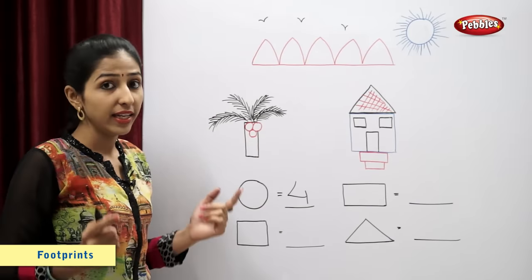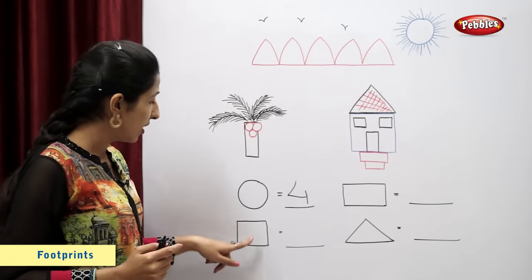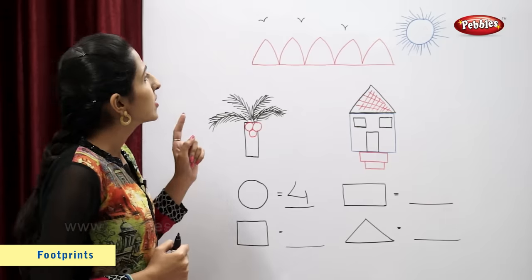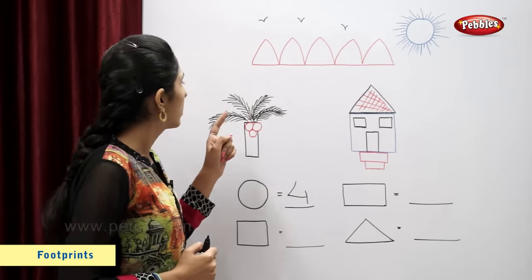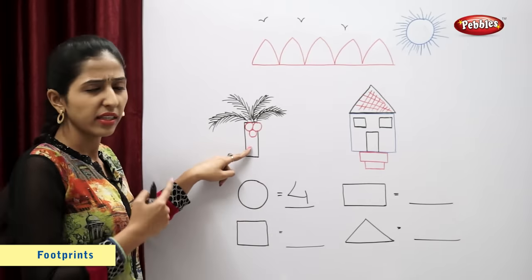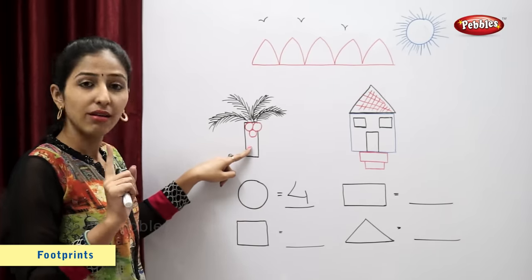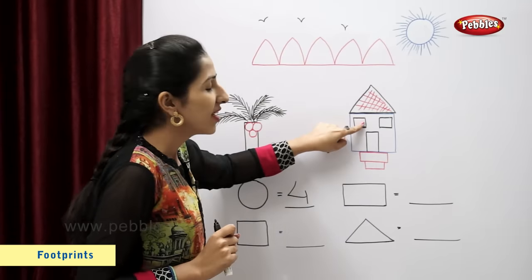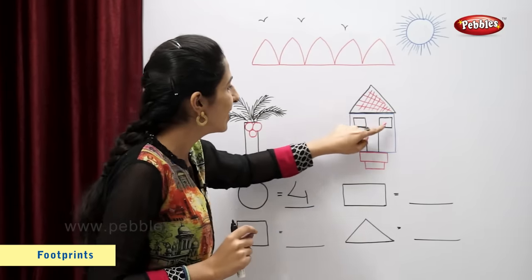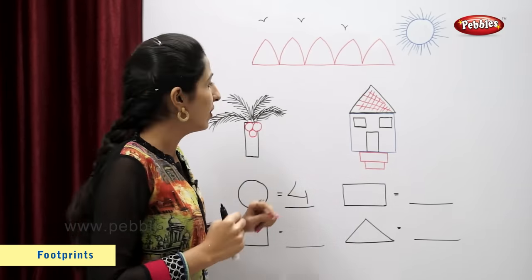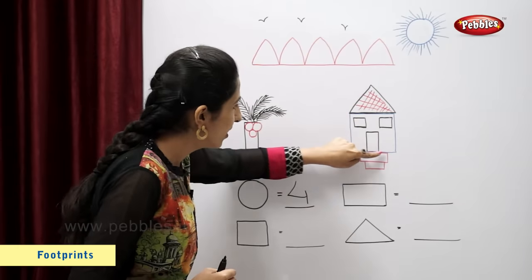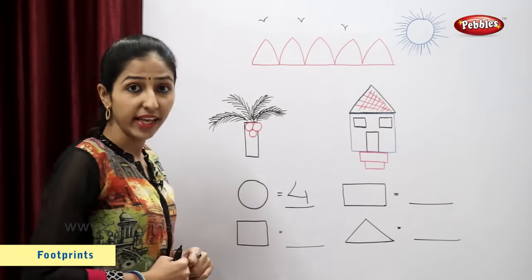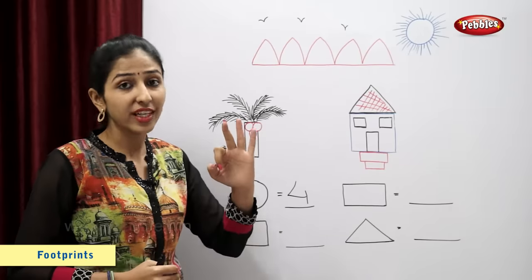Now let's count squares. Is this a square? No. One, two, three. So there are total three squares.